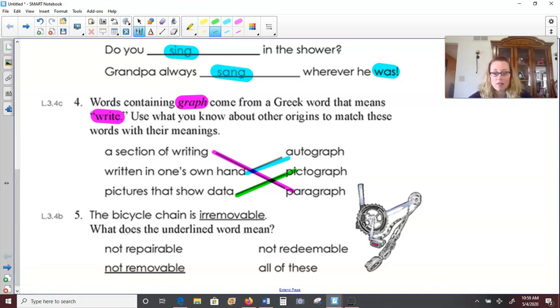Number five, the bicycle chain is irremovable. What does that word mean? Well, it has the main word removable in it. And then the prefix ir means not. So irremovable means it is not removable. Remember when we have prefixes added onto the words, we look for the main word or the root word and then see what's added on.